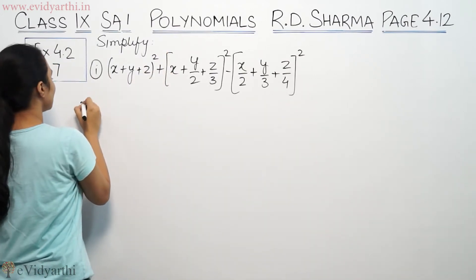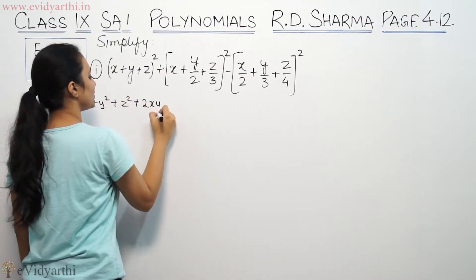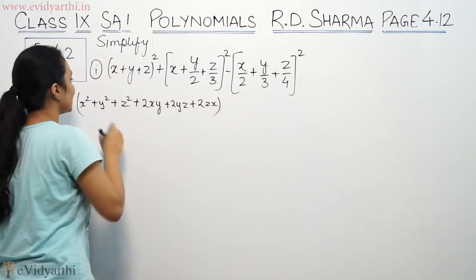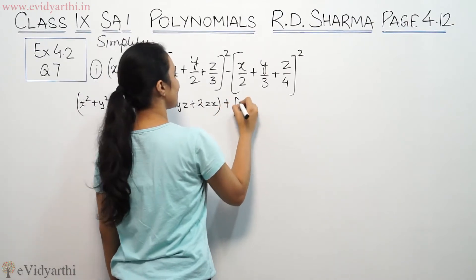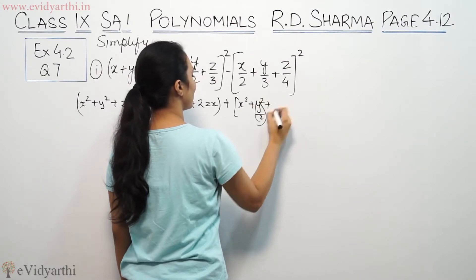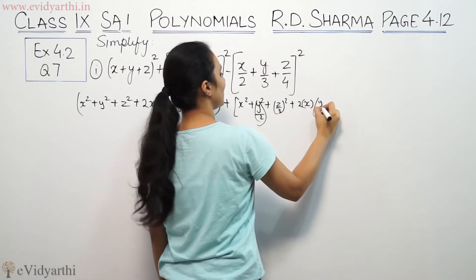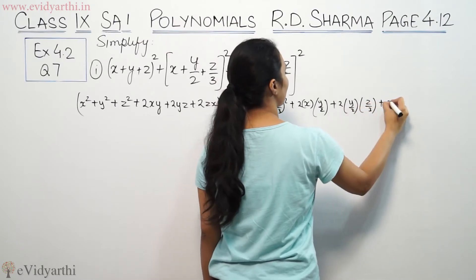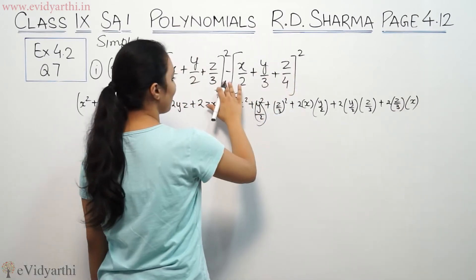So (x+y+z)² is x²+y²+z²+2xy+2yz+2zx, just like we have (a+b+c)². Similarly, the second term is x²+y²/4+z²/9+2abc+2ca.